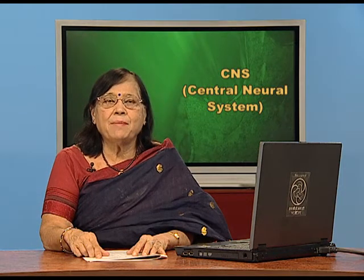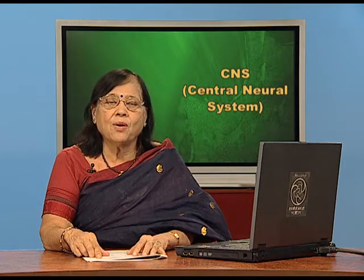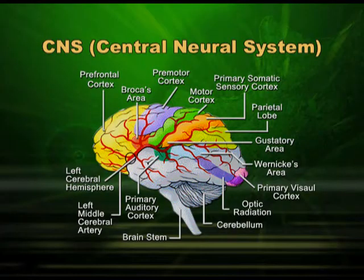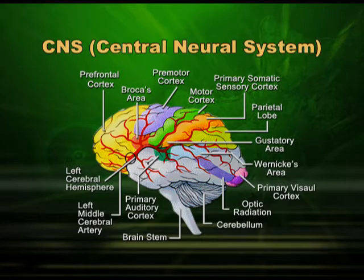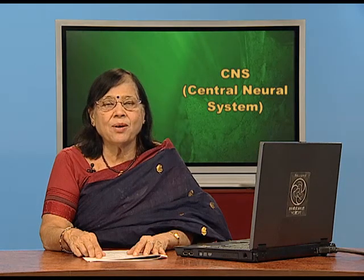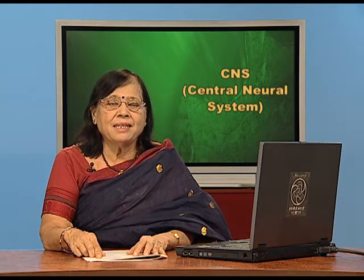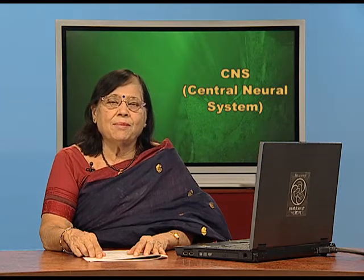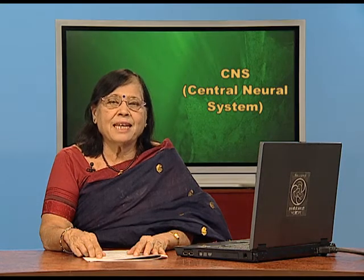Cerebellum is there, brain stem is there which continues as a spinal cord. The point I would like to tell you is that in the brain the outer area is grey matter and the central area is white matter, whereas it is just the opposite in the spinal cord where you have grey matter in the center surrounded by white matter. Grey matter is formed by the cytoplasmic part of the cell and white matter is formed by the axonal part.